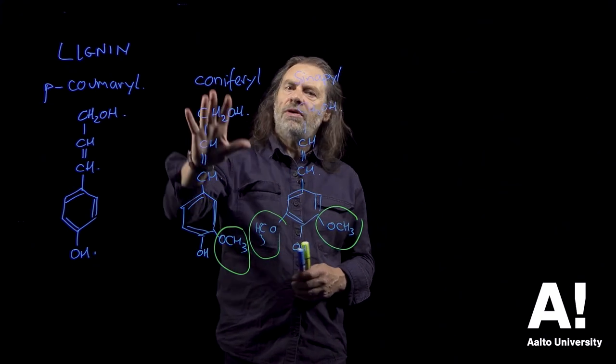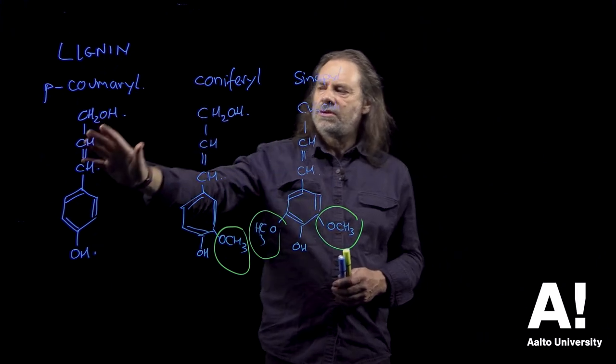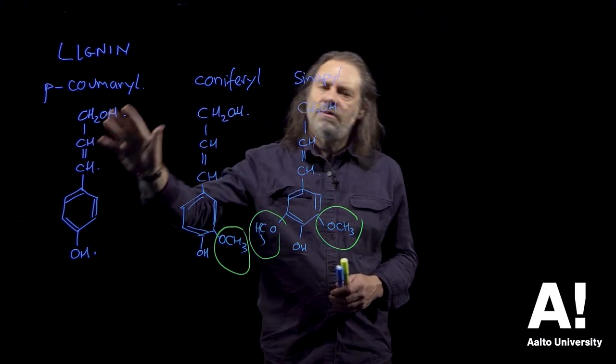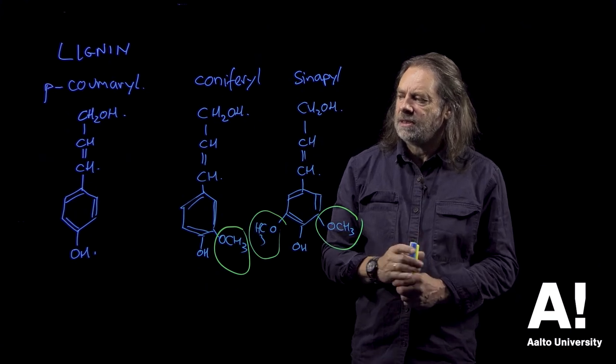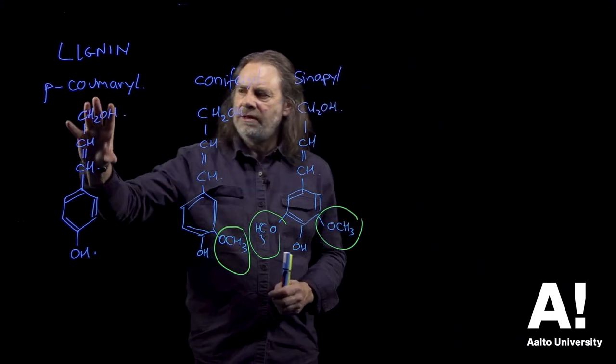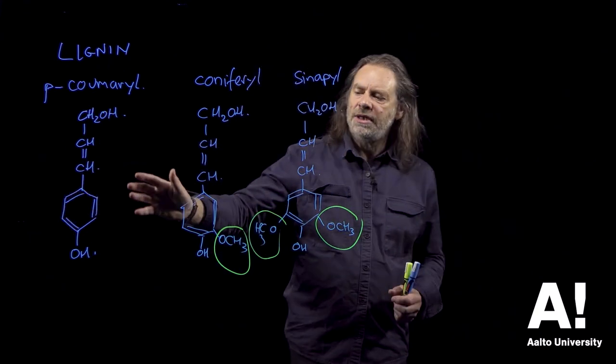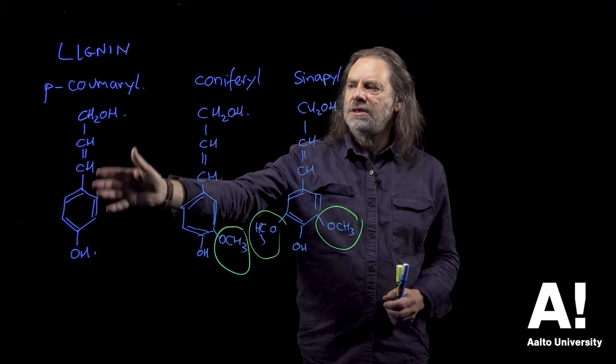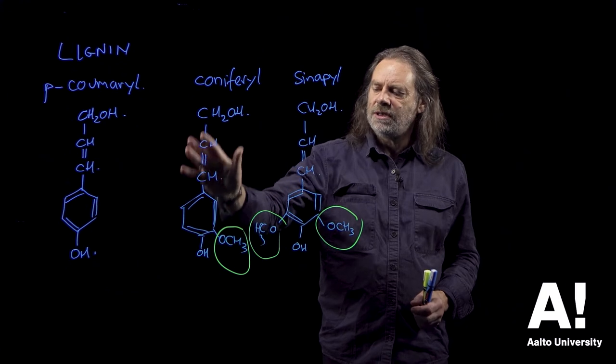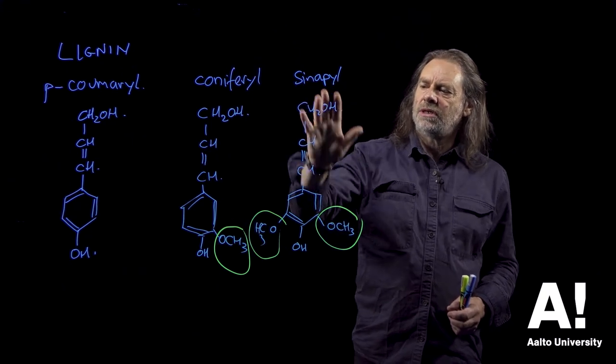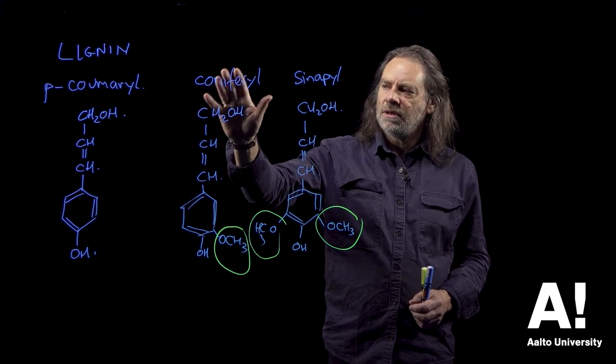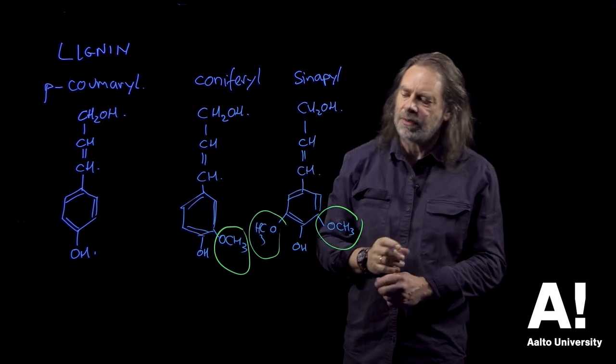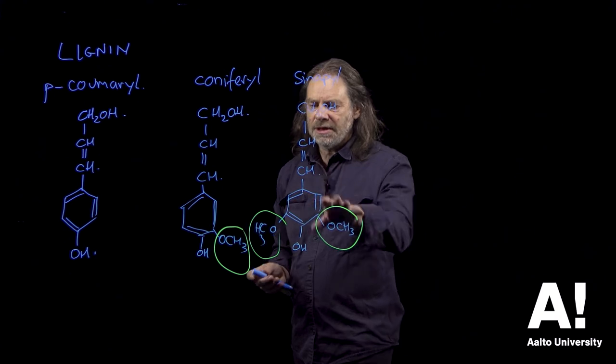So the ratio of these three groups determines the lignin structure to some extent, and you'll find that this type of structure predominates in grassy lignins, whereas tree lignins tend to have more of these, and hardwoods probably have more of this compared with softwoods. This does have consequences.